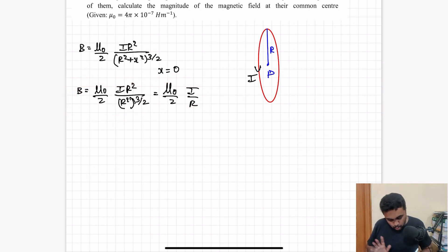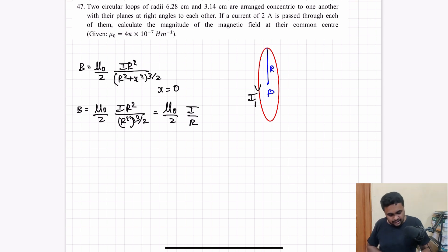I will consider this as loop 1 in which a current of I1 is flowing. They have given the value of I1 as 2 amperes. I will consider the radius as r1, that is 6.28 centimeters, which is 2 pi times 10 power minus 2 meters.